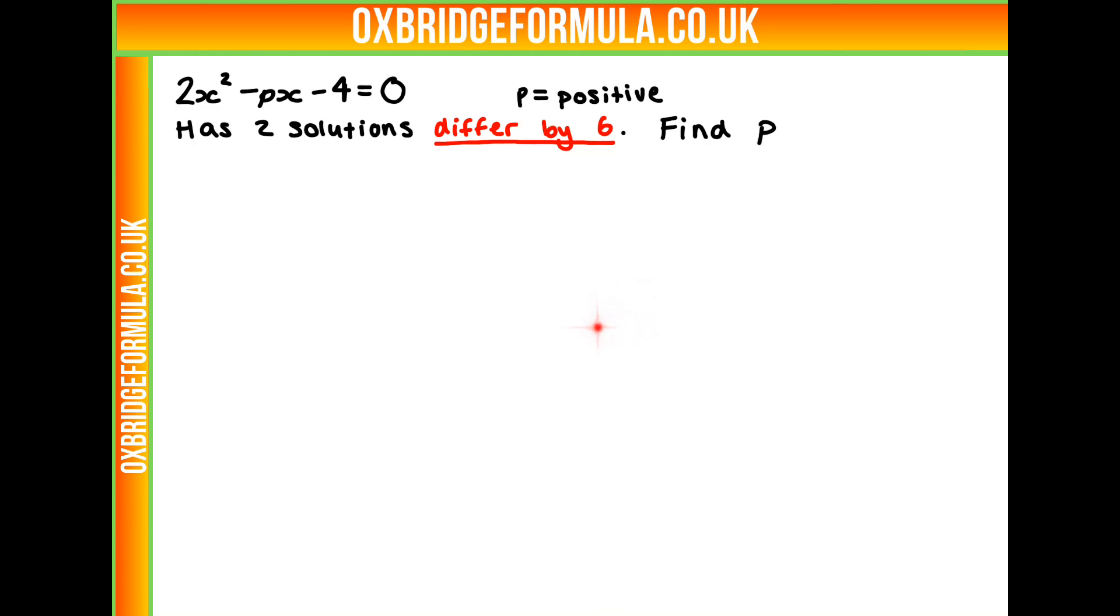So, how are we going to start this? Well, let's have a go at finding our solutions. Now, we can't really factorise it, it would be a bit difficult with our unknown variable p here, but we can use something else. Let's use the quadratic formula. That's x equals minus b plus and minus the square root of b squared minus 4ac all over 2a.